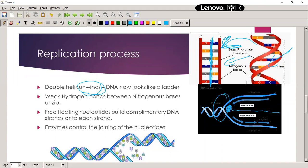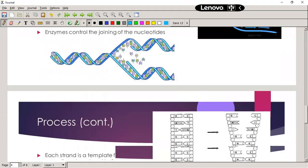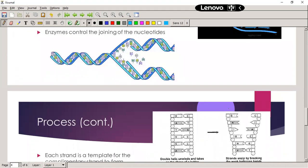Then some free-floating nucleotides build the complementary DNA strands onto each strand. And there we can see over there, these are free-floating nucleotides and they complementary attach themselves to the open zip. Now A to T, T to A, C to G, G to C.